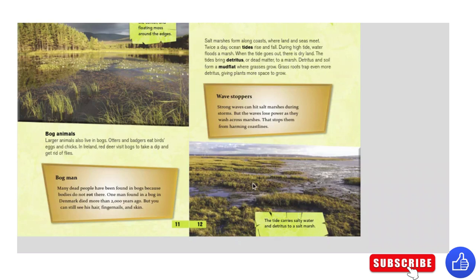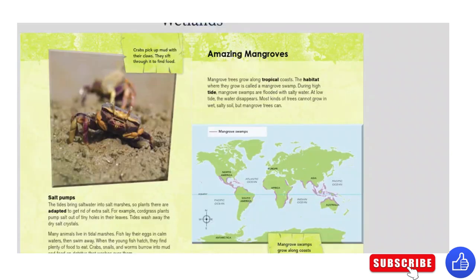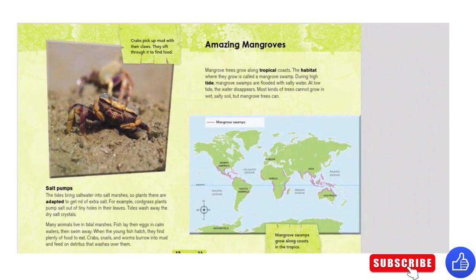Wave stoppers: strong waves can hit salt marshes during storms, but the waves lose power as they wash across marshes, which stops them from harming coastlines. The tide carries salty water and detritus to a salt marsh. Crabs pick up mud with their claws and sift through it to find food.